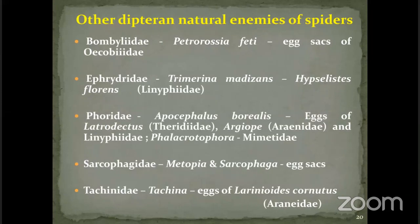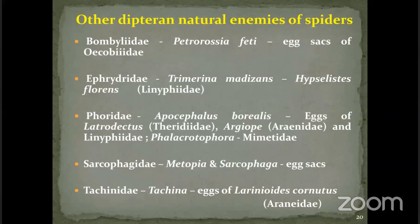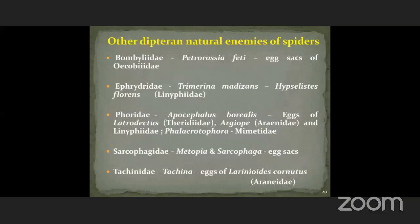Other dipteran natural enemies include Bombyliidae, Ephydridae, and Phoridae. Here comes convergence — these groups of natural enemies, including Bombyliidae, Ephydridae, Phoridae, and Sarcophagidae, can act as both parasitoids and predators of spider eggs. When there are enough hosts, they can survive as predators, consuming more than one egg. So they can act both as a predator and as a parasitoid.